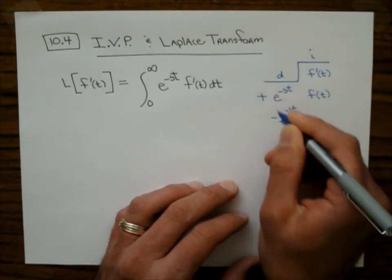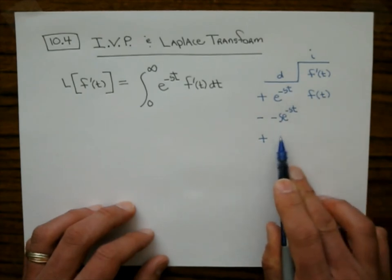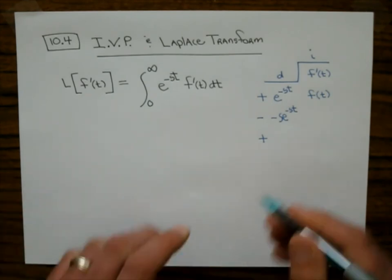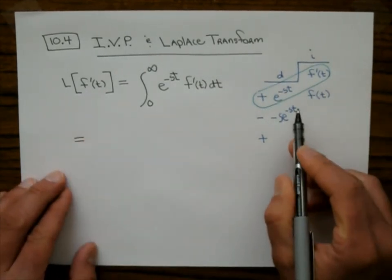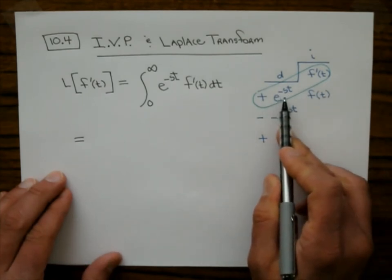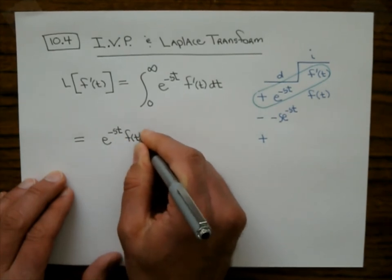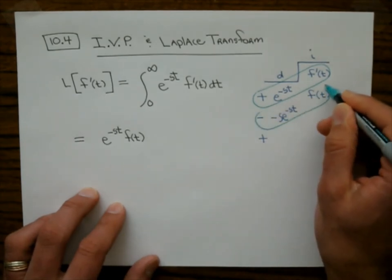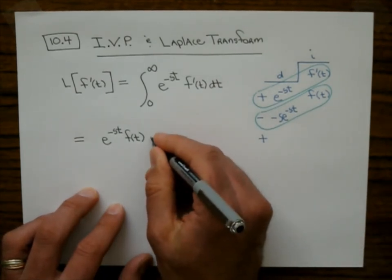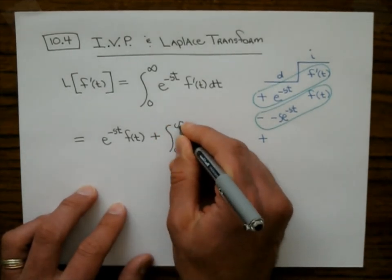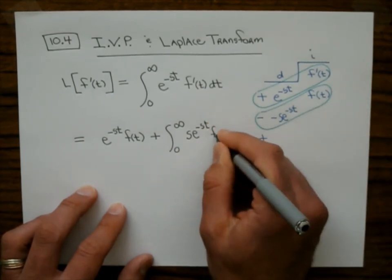The derivative of e to the negative st is negative s e to the negative st — a little chain rule there. And then I have plus, minus, plus. When I turn on the integration by parts machine, I write out f of t times e to the negative st. Then immediately I turn off the machine by taking the integral of the product of those — two negatives make a plus — so we get plus the integral of s e to the negative st times f of t dt.